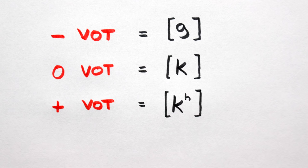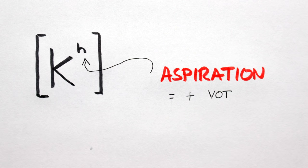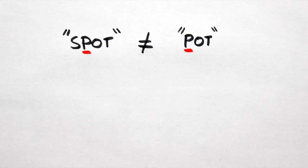This is important especially when you consider aspiration, aka positive voice onset time, denoted with that little superscript h there. Take the English words spot and pot. We think of the two p sounds as being the same, but they aren't.